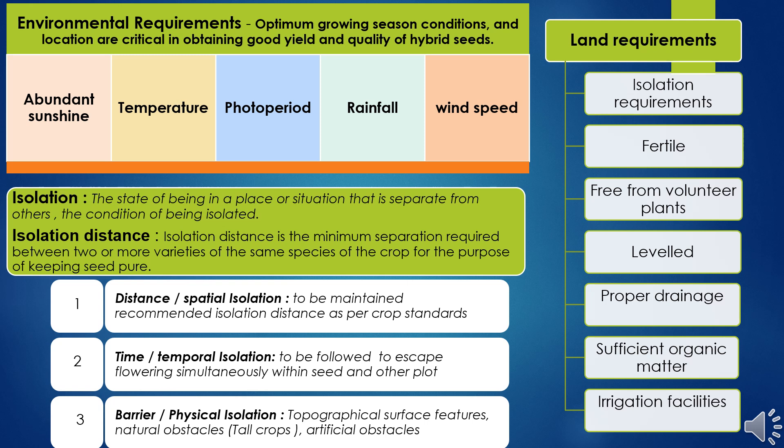Sunshine hours are kept in planning in case of photoperiod-sensitive crops where conditions are required for flowering and seed set. Some species need high temperature, while others require low temperature to promote flowering through vernalization. Many temperate vegetables like cabbage, cauliflower, beetroot, European-type radish, and carrot need vernalization. There should be moderate rainfall and humidity for most crops, as high rainfall areas are not suitable for hybrid seed production.